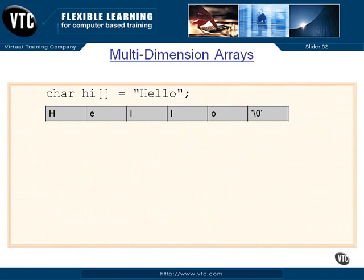Here's a single-dimension array we've already talked about. We have a character array called 'hi'. We've left the size open so it will be defined at compile time — it will be six, because there are five characters and then a null since we put double quotes around it. So this is what comes up in memory: H-E-L-L-O and then the null at the end. This is hi sub-zero, hi sub-one, two, three, four, and hi sub-five. That's a single-dimension array.